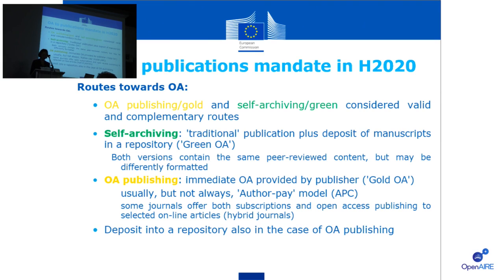There are two routes towards open access publication: gold open access and green open access. Under green open access, which is so-called self-archiving, beneficiaries deposit their published articles or the final peer-reviewed manuscript in an online repository before, alongside, or after publication, and must ensure open access within the embargo period during which publishers sell subscriptions. Under the gold model, also referred to as open access publishing, beneficiaries can publish immediately in open access journals. In this model, payment of publication costs is shifted away from readers paying via subscription, and the most common business model is based on article processing charges.